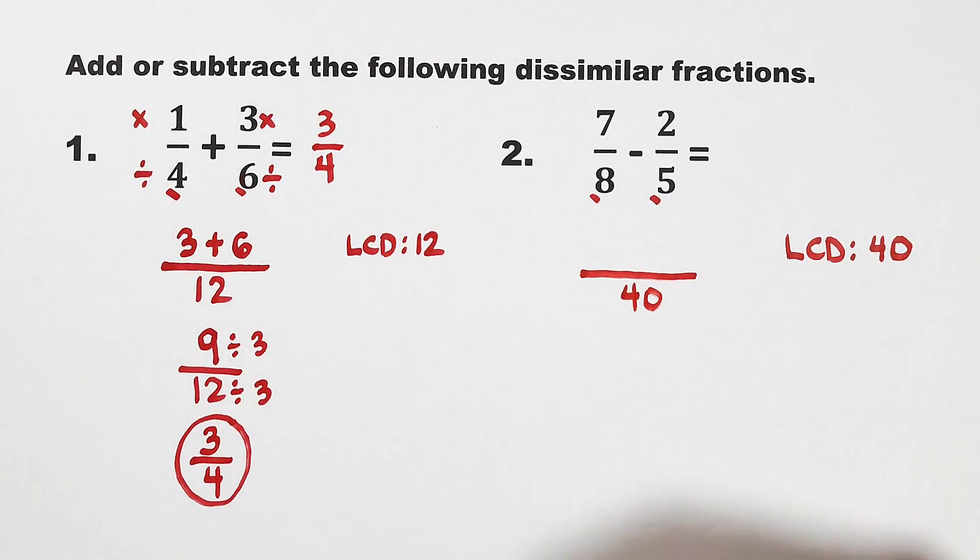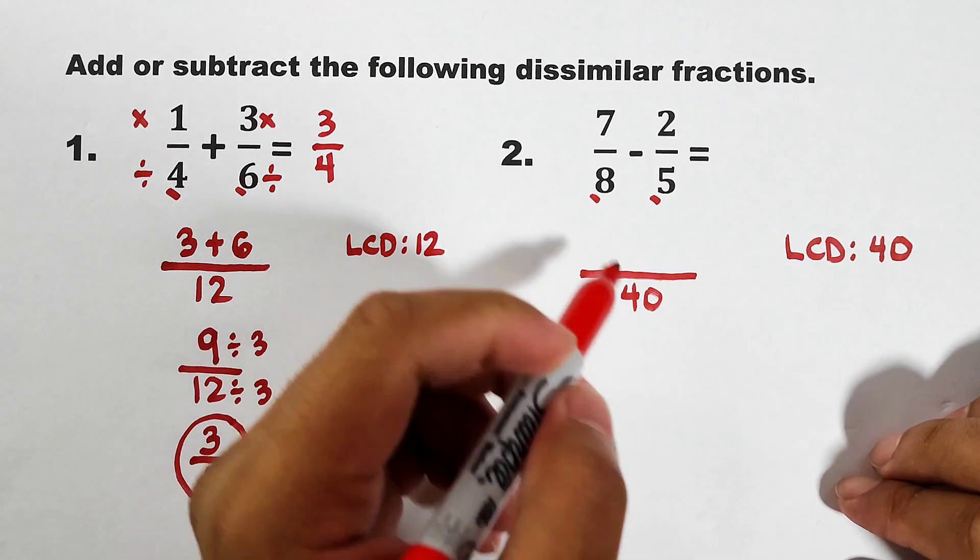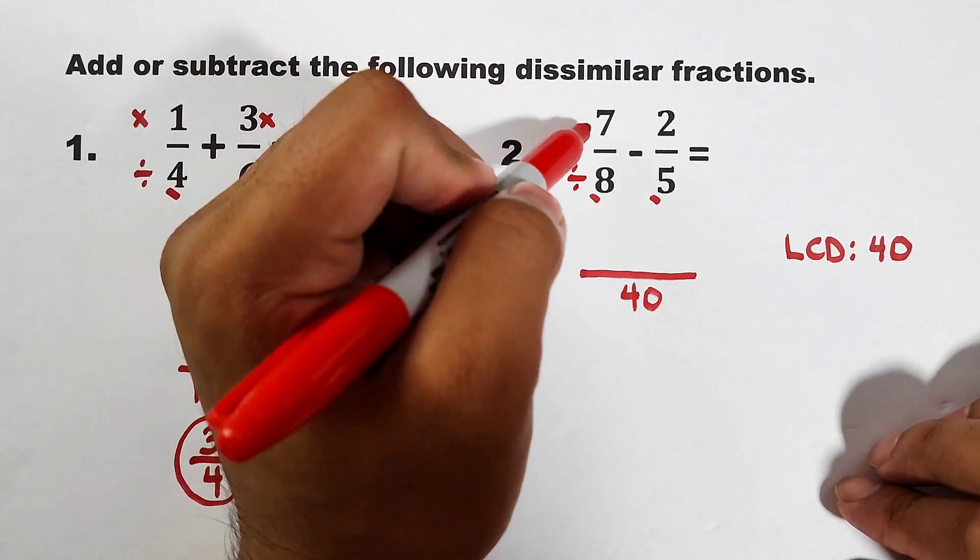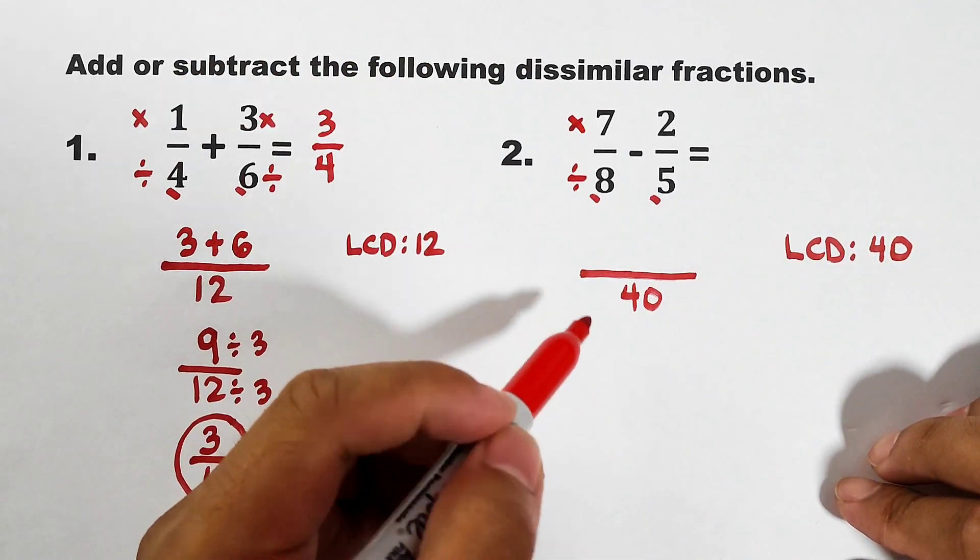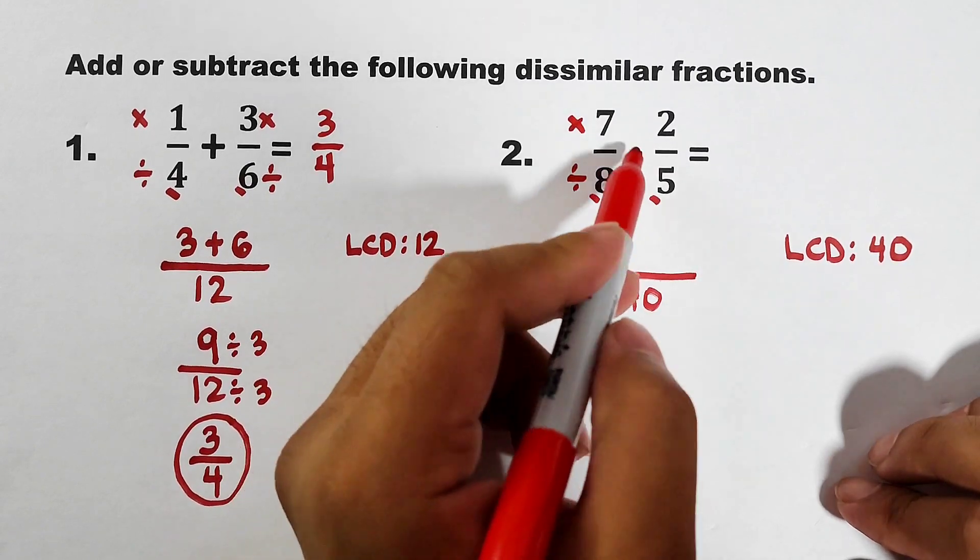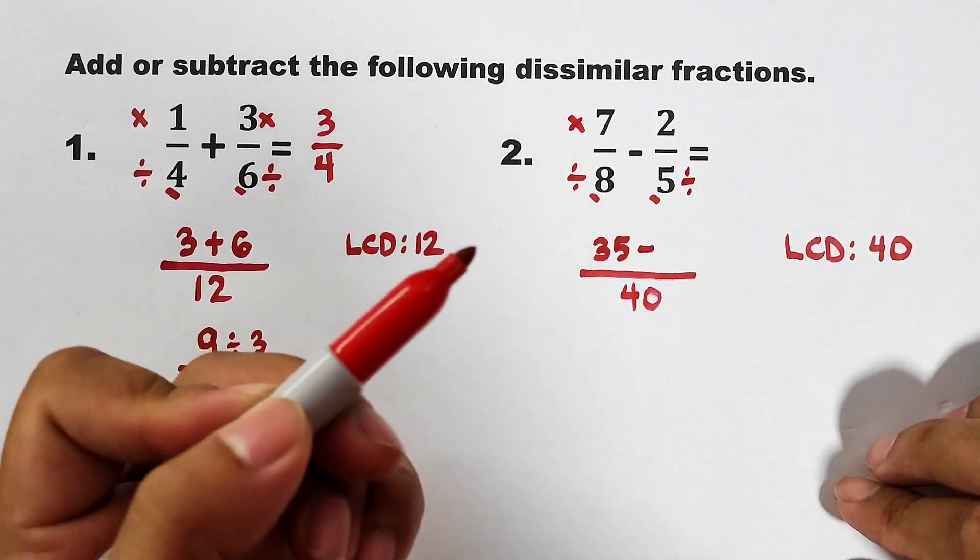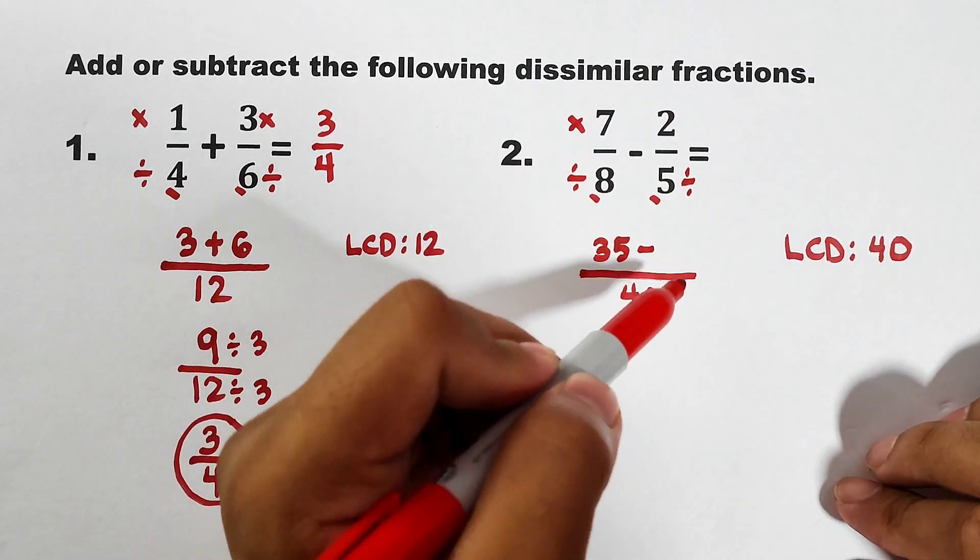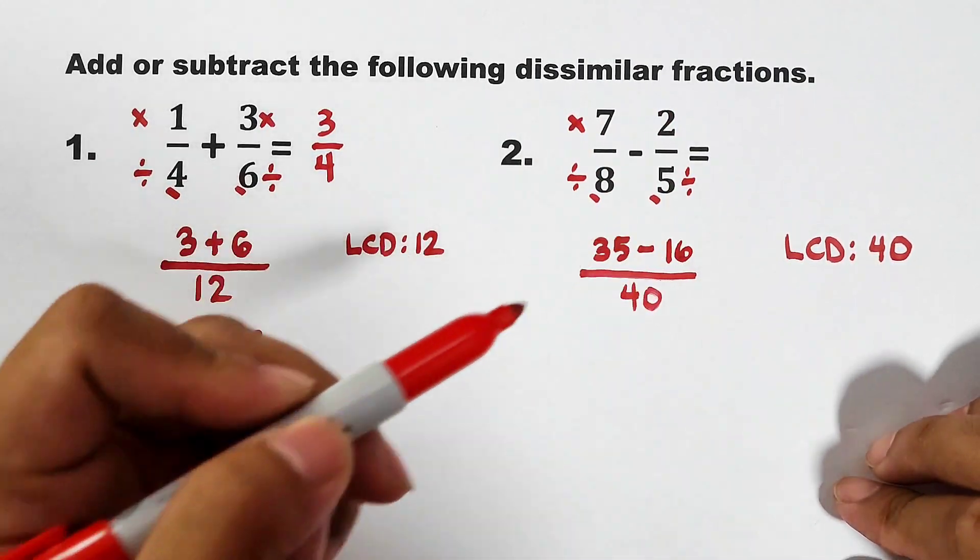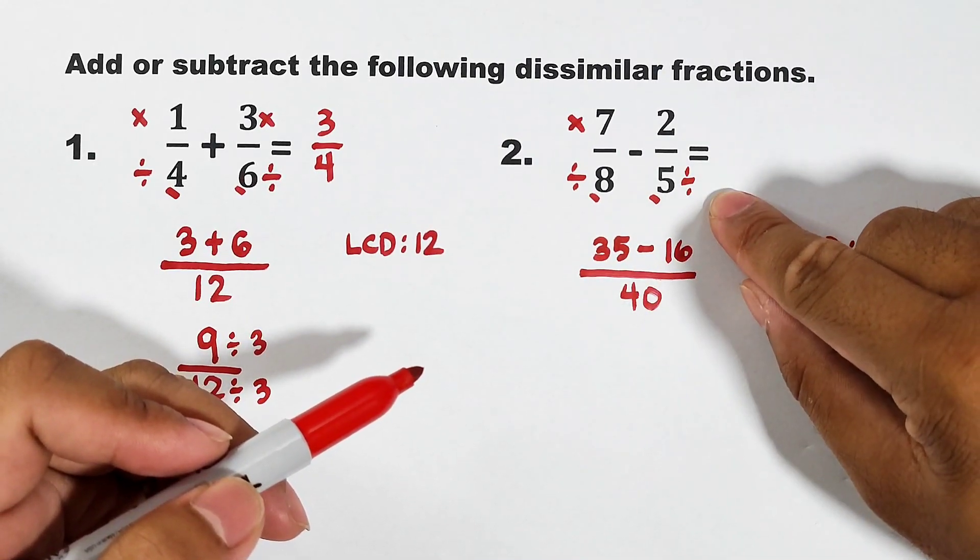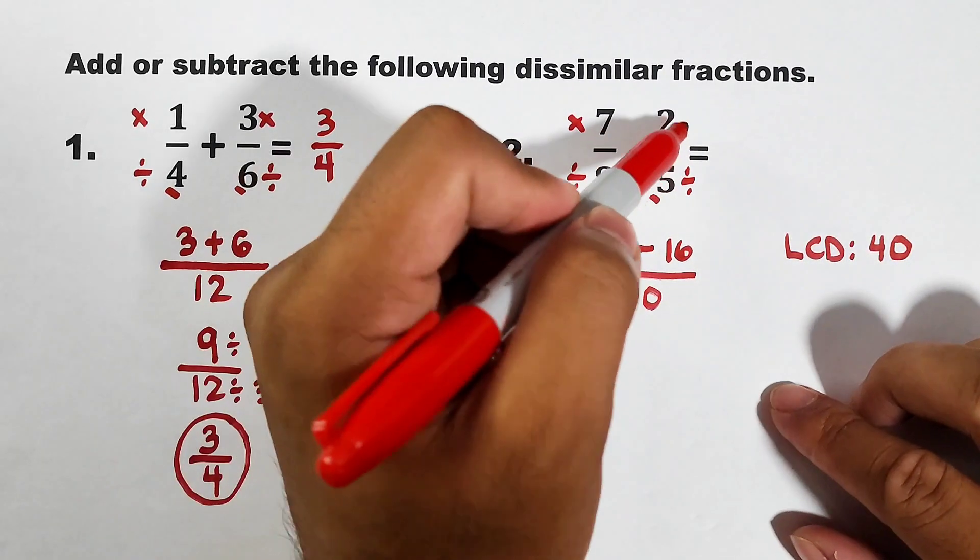Search nyo lang dyan, least common denominator by teacher gone, o kaya sa iba pang mga YouTube creators. So, we have 40 divided by 8 is equal to 5 times 7. That is 35. Then minus 40 divided by 5 is 8 times 2. That is 16. Again, 40 divided by 5 is 8 times 2 is equal to 16.